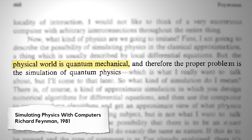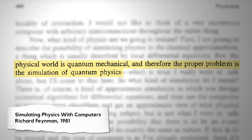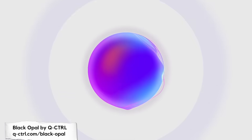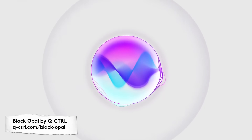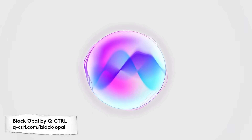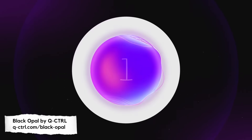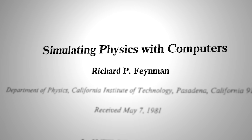Feynman says that the physical world is quantum mechanical, and therefore the proper problem is the simulation of quantum physics. Quantum physics refers to the world of the very small, since a quantum is the smallest possible unit of something. On the quantum scale, particles can seem to behave strangely, existing in a cloud of probabilities and only collapsing into a definite state once we measure them. Conventional bits — ones and zeros — can't keep track of quantum information. Feynman's 1981 speech was actually the first work to specifically discuss the construction of a machine that would operate on quantum mechanical principles, using hardware that employs quantum physics itself. He came up with just one rule: the size of the computer would only need to be proportional to the size of the physical system it was simulating.